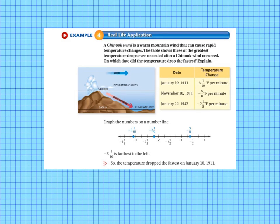Example 4 is our real life application. A Chinook wind is a warm mountain wind that can cause rapid temperature changes. The table shows three of the greatest temperature drops ever recorded after a Chinook wind occurred. On which date did the temperature drop the fastest? So we need to figure that out and we need to explain our answer.